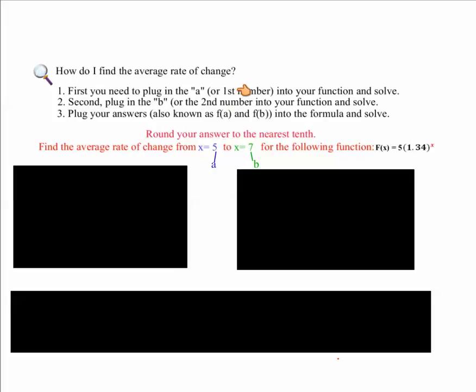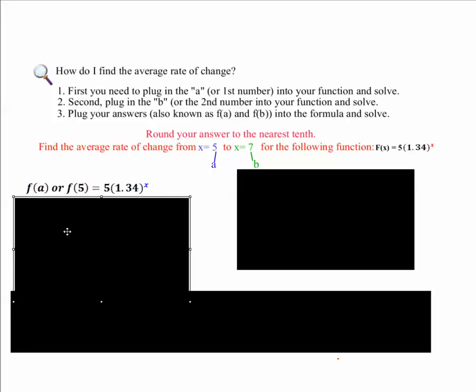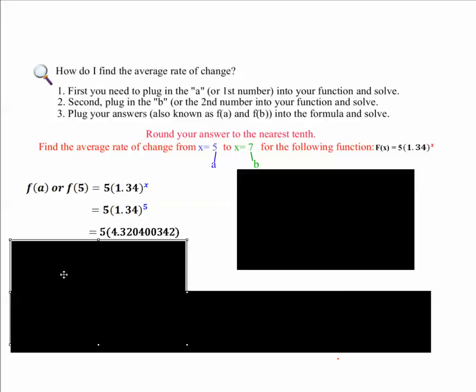So what we're going to do is break this up. Following step one, we have plug a into your function and solve. So we're going to plug a into our function. Our function is 5(1.34)^x. So if we plug 5 in there, we're going to have 5 times 4.320400342, which is a long number, but again, like I said, do not round until the very end.